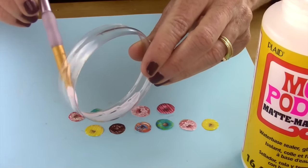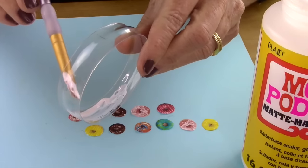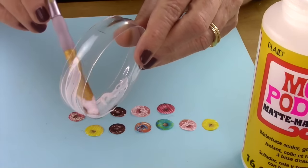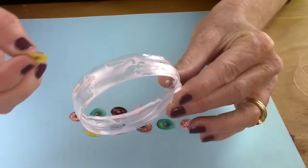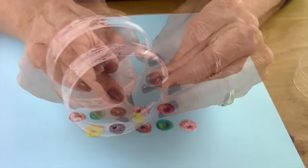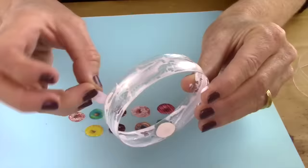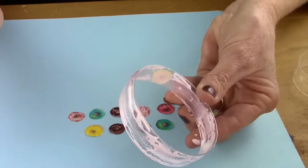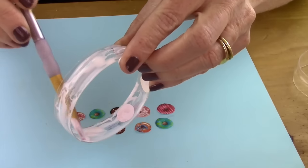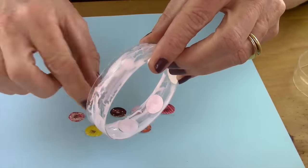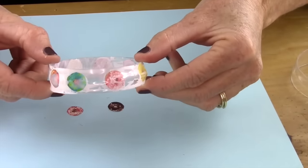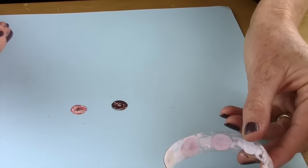Then take Mod Podge and paint it inside the bracelet. This is where you'll take your images and put them upside down so the color is facing down. Line that all the way around your bracelet, and then set it to the side to dry.